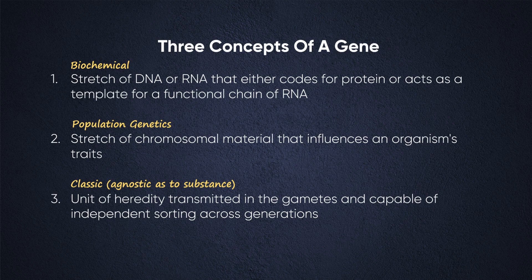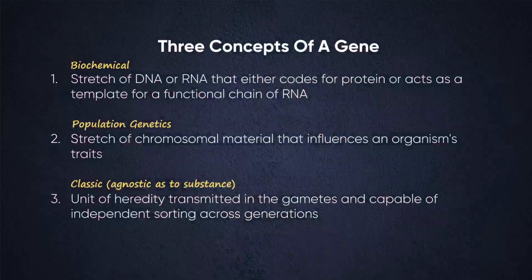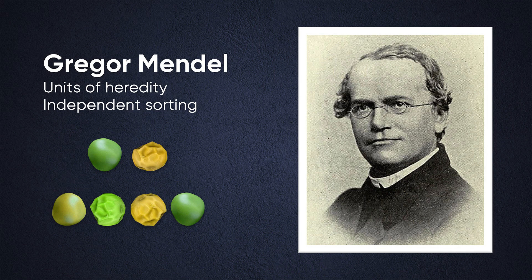That had changed by the time the field of population genetics really took off. By that time, we knew that chromosomes contained genetic information. The traits that Mendel studied sorted independently so easily because they existed on different chromosomes. When a sex cell is being produced through the process of meiosis, whole chromosomes are shuffled and dealt out to the offspring — so when genes exist on different chromosomes, independent sorting happens really easily.